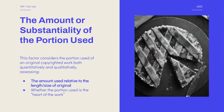The third factor is the amount or substantiality of the portion used. The Columbia Copyright Advisory Service notes that, though the law does not set exact quantity limits, generally the more you use of a copyrighted work, the less likely you are within fair use. The amount of the original is usually evaluated relative to its size or length, and in light of the amount that you need to serve a proper objective.